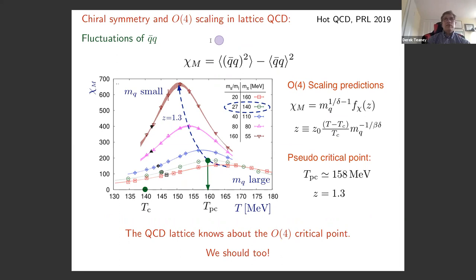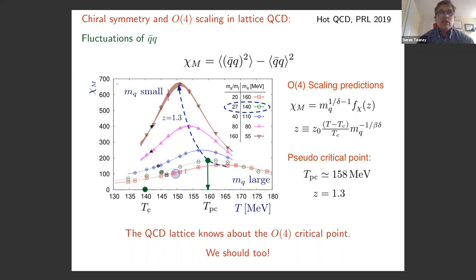Once you have chiral symmetry restoration, as we know from statistical mechanics, the magnetization — or in this case psi-bar psi — begins to fluctuate as you approach T_c. The order parameter is the chiral susceptibility, the square of psi-bar psi over its expectation value. Close to a critical point there is a scaling prediction for how this susceptibility should change. Here I show lattice data for this chiral susceptibility as a function of quark mass — large quark mass on one end, small quark mass on the other, and the quark mass looks very much like an external magnetic field.